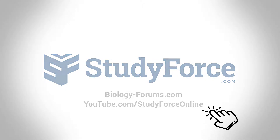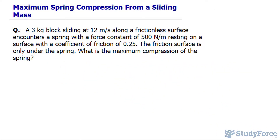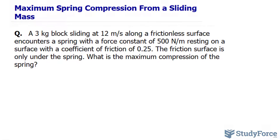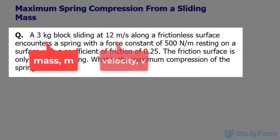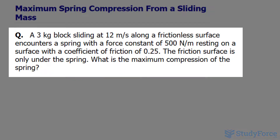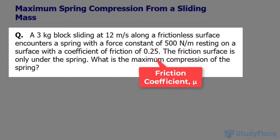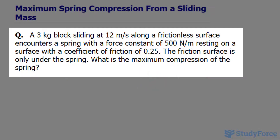In this lesson, I'll show you how to find the maximum spring compression from a sliding mass interacting with a spring. The question reads: a 3 kilogram block sliding at 12 meters per second along a frictionless surface encounters a spring with a force constant of 500 newtons per meter resting on a surface with a coefficient of friction of 0.25. The friction surface is only under the spring. What is the maximum compression of that spring?